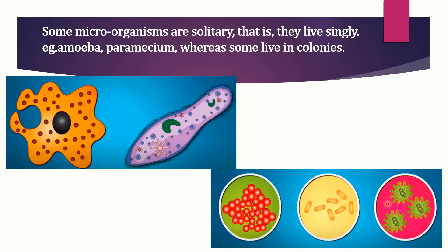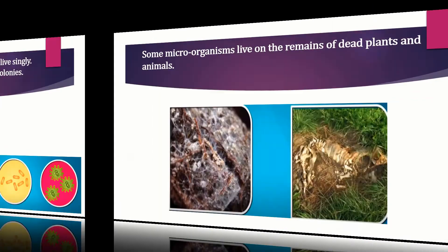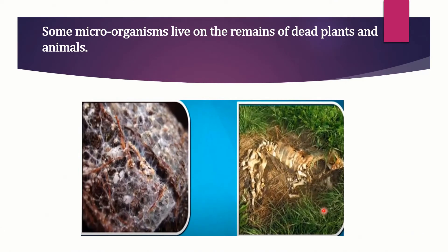Some microorganisms are called solitary, that is, they live singly. Examples include amoeba and paramecium. Whereas some microorganisms live in colonies, as you can see here. Some microorganisms live on the remains of dead plants and animals.